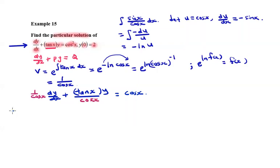Then write the left-hand side in the form of d/dx of vy. So d/dx of v times y, where v is 1 over cos x, equals cos x. Then solve this by integrating both sides.